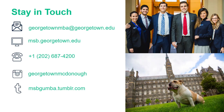Regarding scholarship opportunities across rounds: round one has the most funding available, and I would say rounds one and two are the best options. There are people awarded scholarships in rounds three and four as well — we admit knowing that great candidates will come in later rounds. Apply when you are most confident with your application, but prioritize rounds one and two if scholarship funding is important to you.